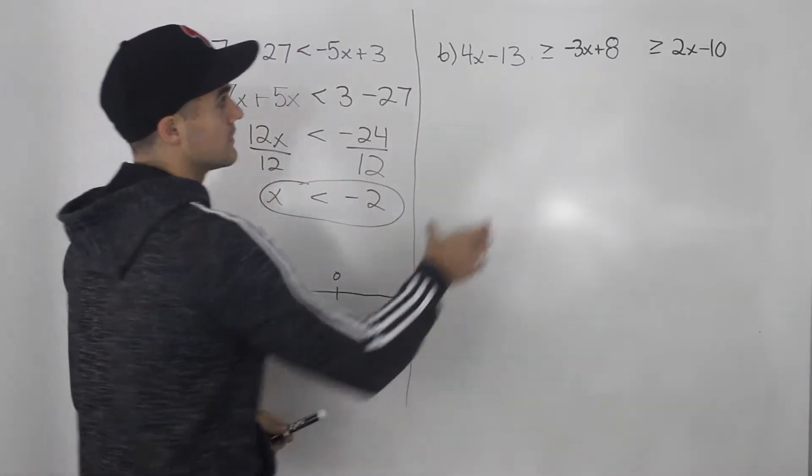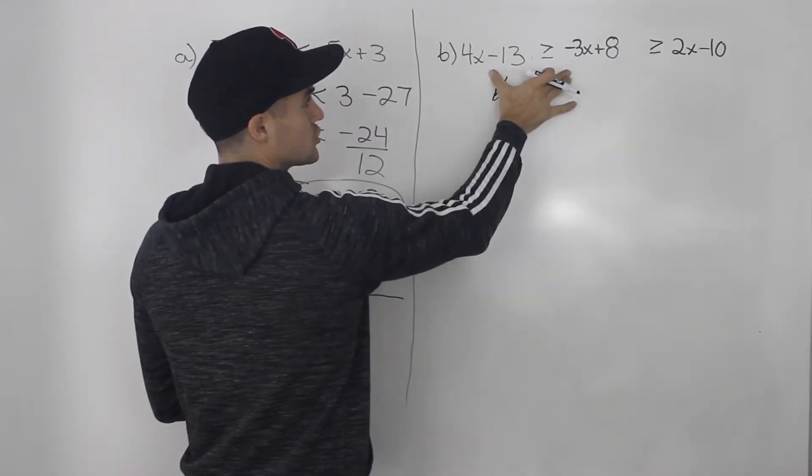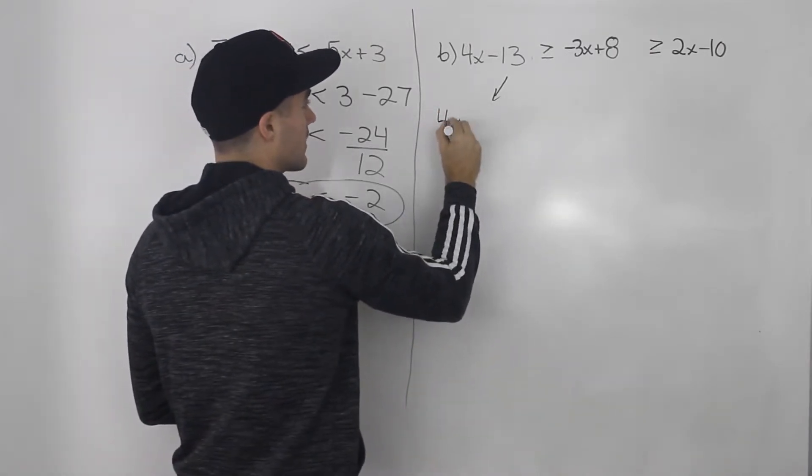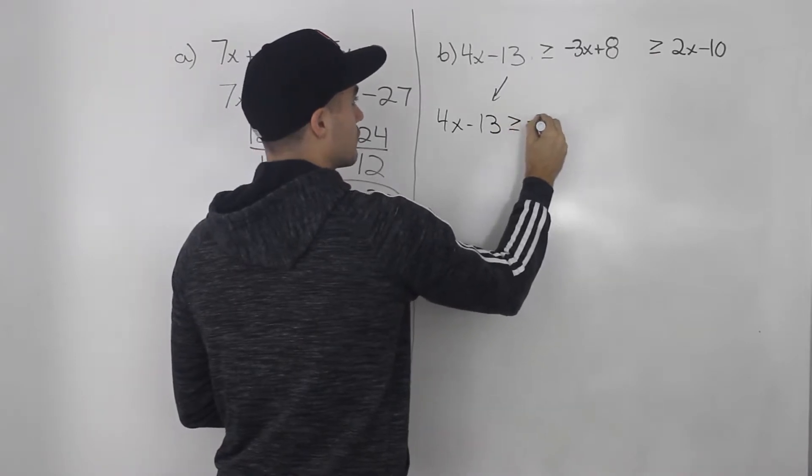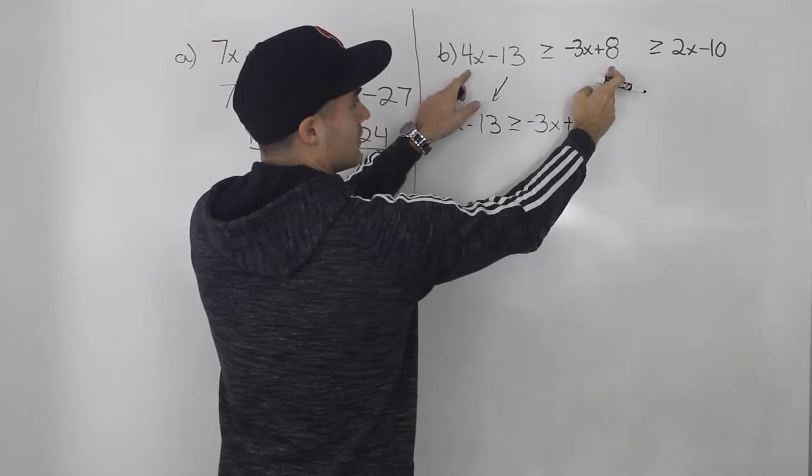The way I like to do them is I like to look at each of the individual inequalities separately. So I'll write out this 4x minus 13 greater than or equal to negative 3x plus 8. So that's this portion of inequality.